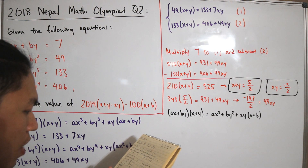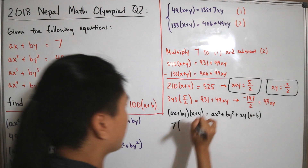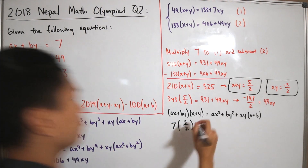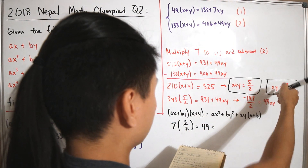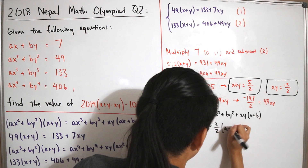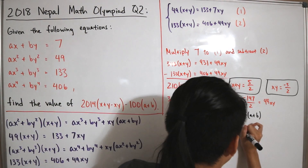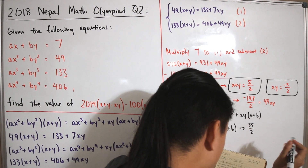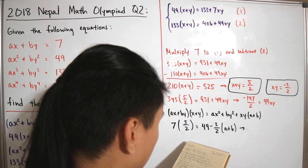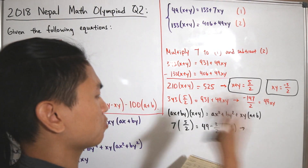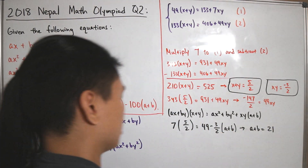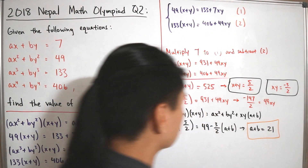Substituting in: 7 × (5/2) = 49 + (-3/2)(a + b), which gives 35/2 = 49 - (3/2)(a + b). Subtracting 49 from both sides and solving, we get a + b = 21.